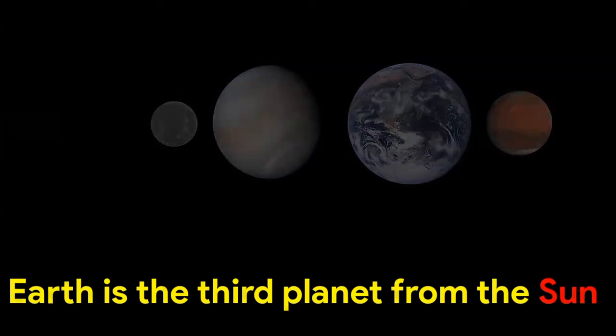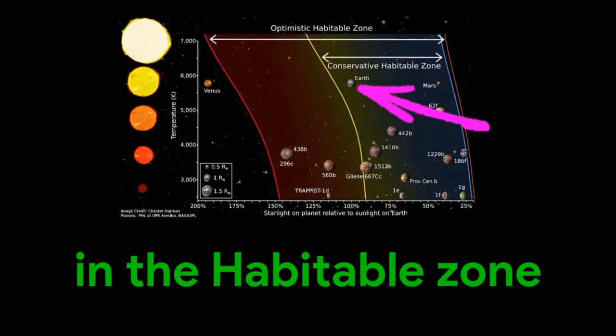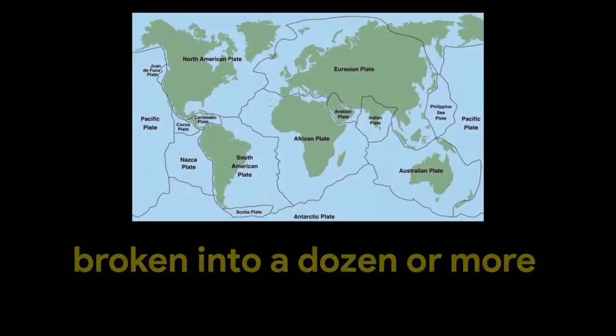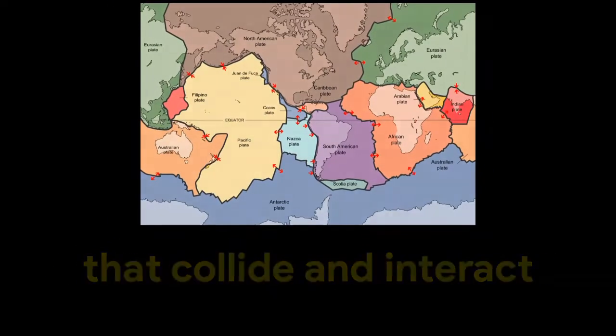Earth is the third planet from the Sun in the habitable zone. Earth's crust is broken into a dozen or more tectonic plates that collide and interact.